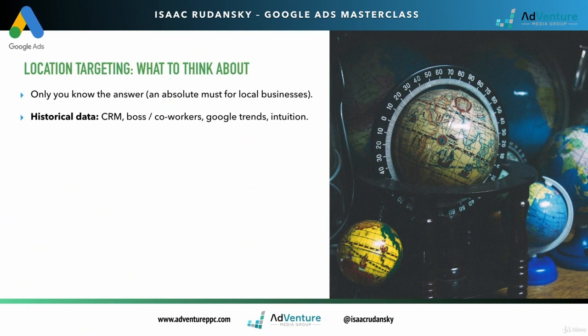So historical data like your CRM, you could speak to your boss, you could speak to coworkers, you could just think about what feedback you've gotten from customers in certain locations. You could use Google Trends, google.com/trends, to find out certain searches or products that are trending in certain areas or certain services.